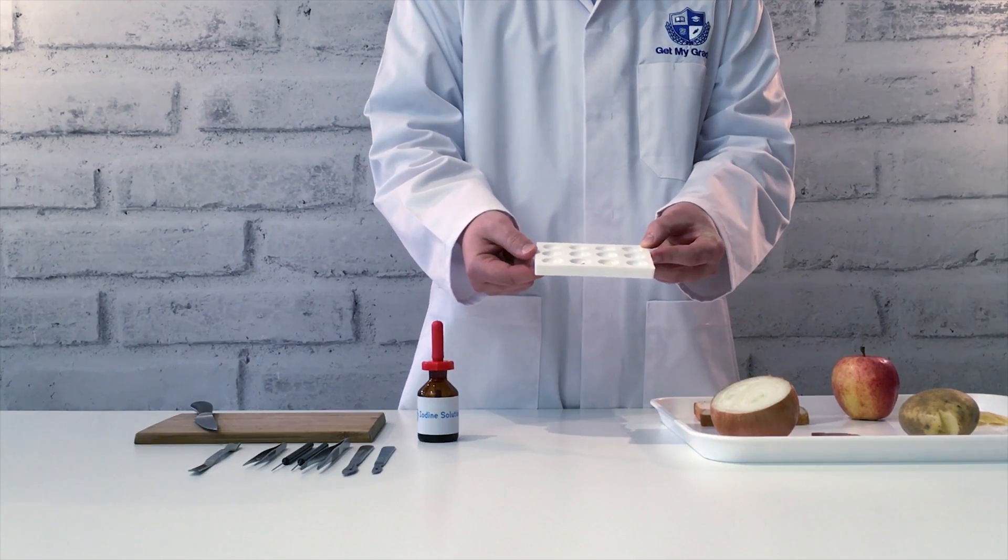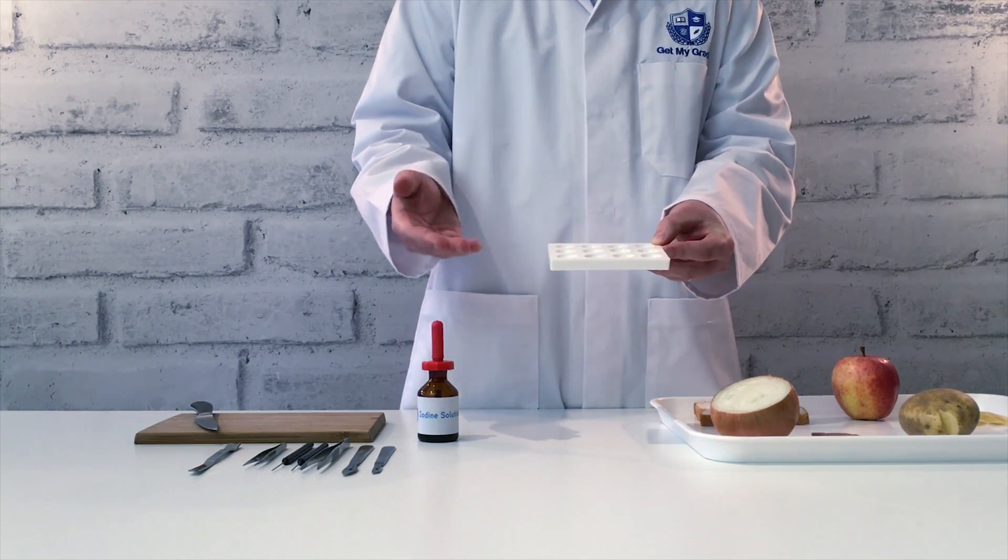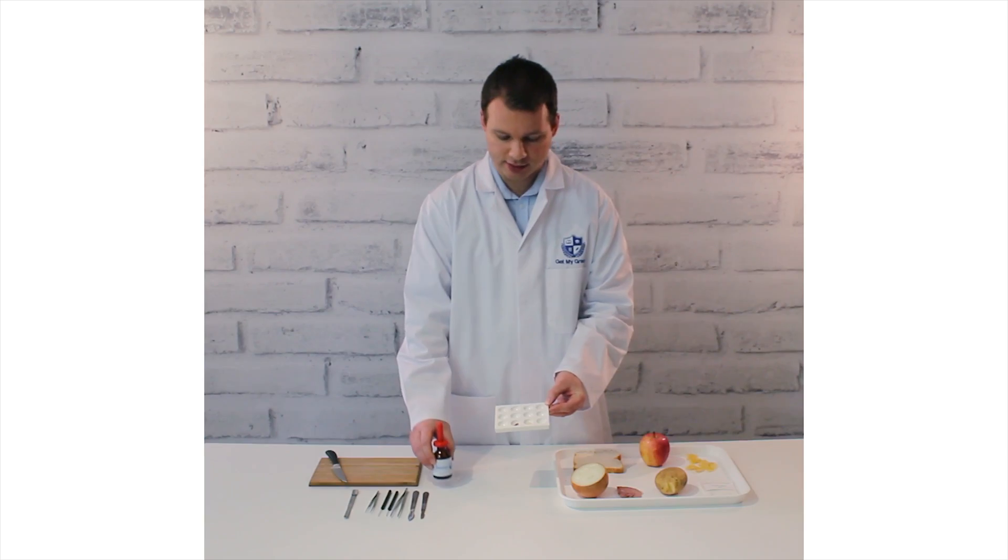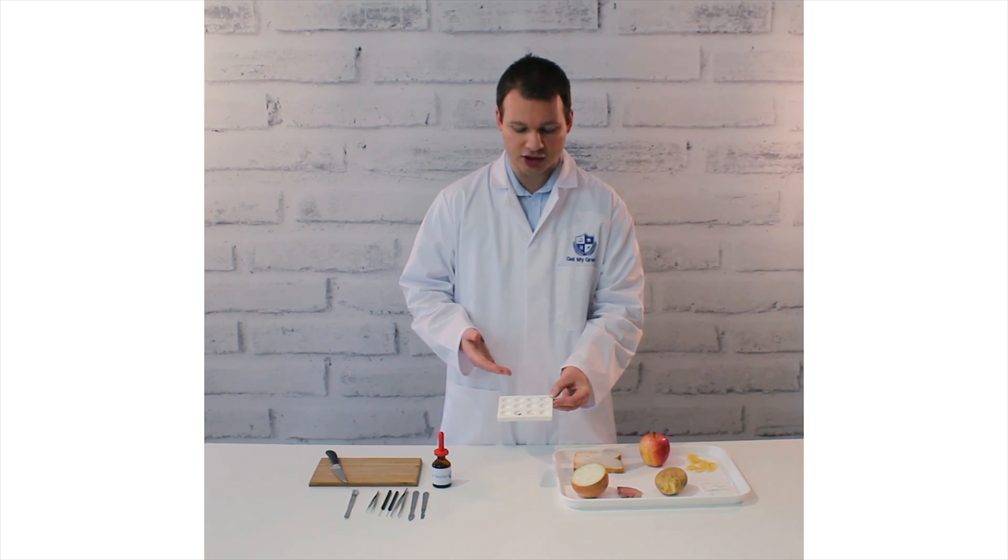So this is a spotting tile. The nice white color means that we can easily see any change in the color of the iodine solution that we're going to use, and that means we can easily identify if starch is present or not.